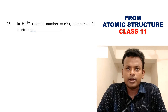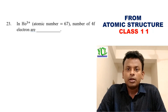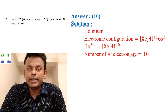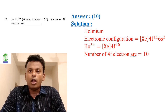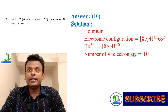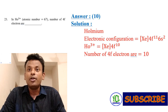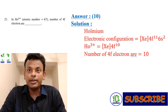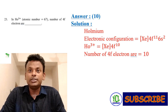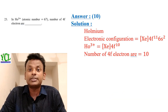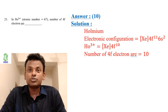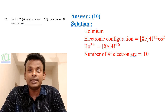Question 23: In Ho³⁺, the number of 4f electrons is? The answer is 10. Holmium has atomic number 67 and electronic configuration [Xe] 4f¹¹ 6s². Ho³⁺ loses 3 electrons, leaving 4f¹⁰. So the number of 4f electrons is 10.